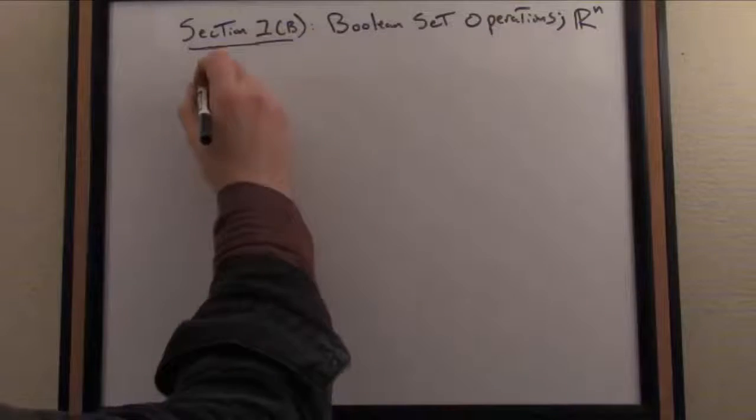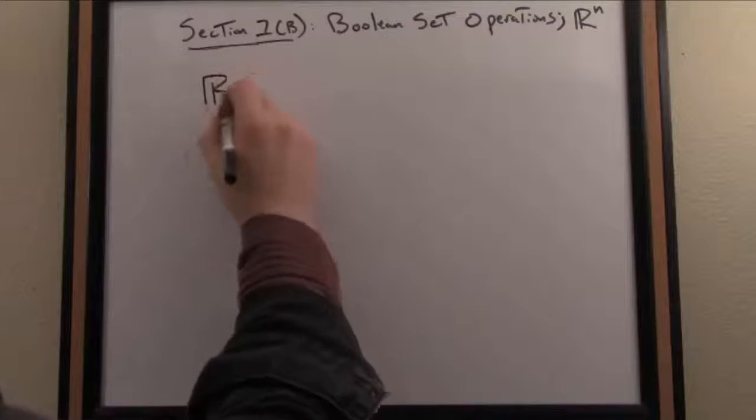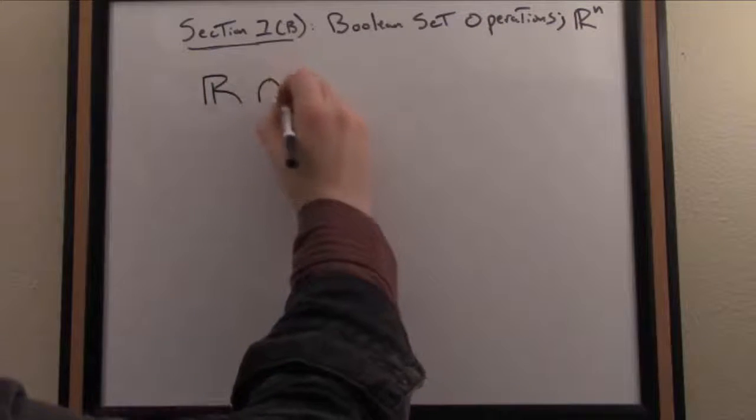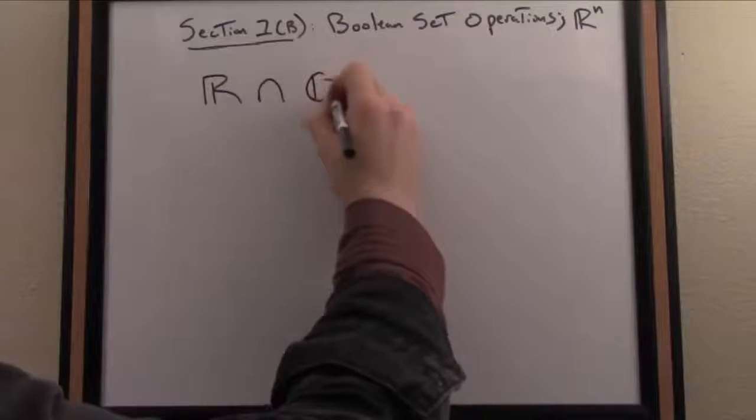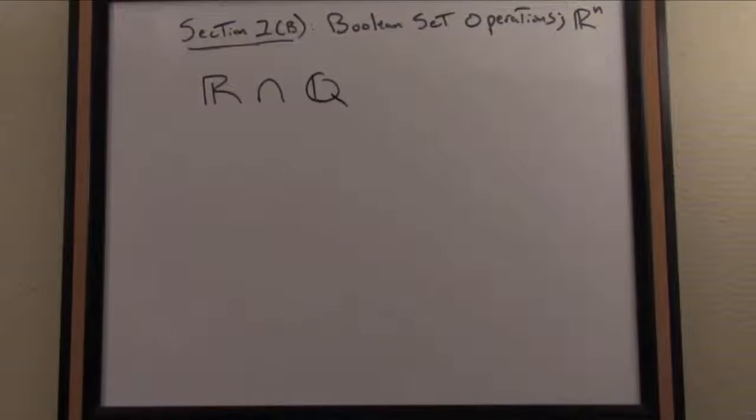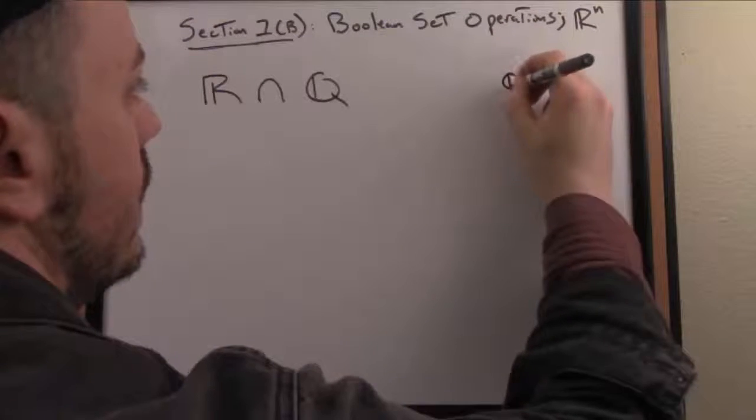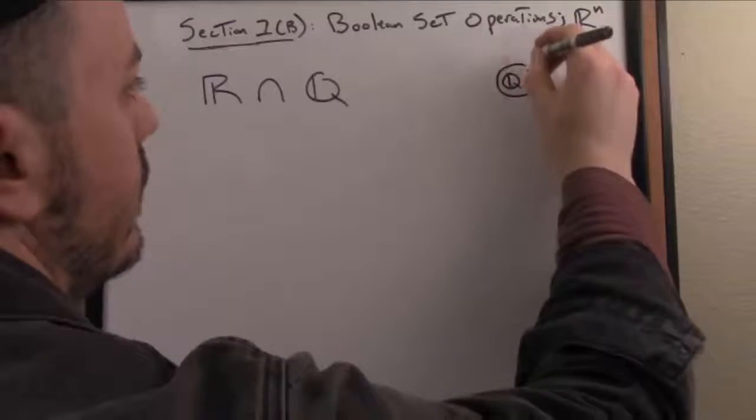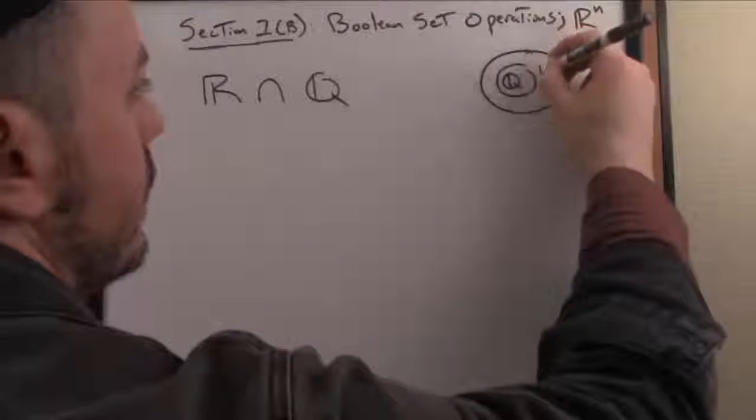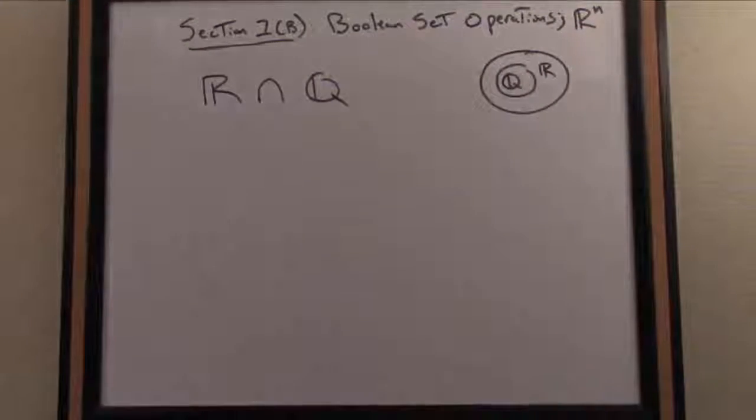If you recall, let's say the real numbers with a boldface R. What's the intersection of the reals and the rationals? We want to remember that by our Venn diagram from the previous sections, the rationals are a proper subset of the reals. In other words, they're contained entirely within the reals.